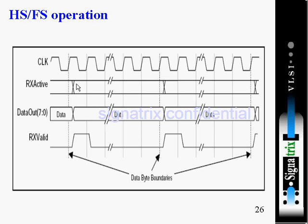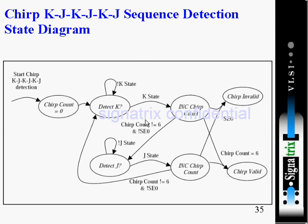Now during reset time, when there is a handshake mechanism — in order for the host to tell the device that it should settle in high speed mode — during that time we have to count three KJ chirp sequences. This is the state machine to detect those things.